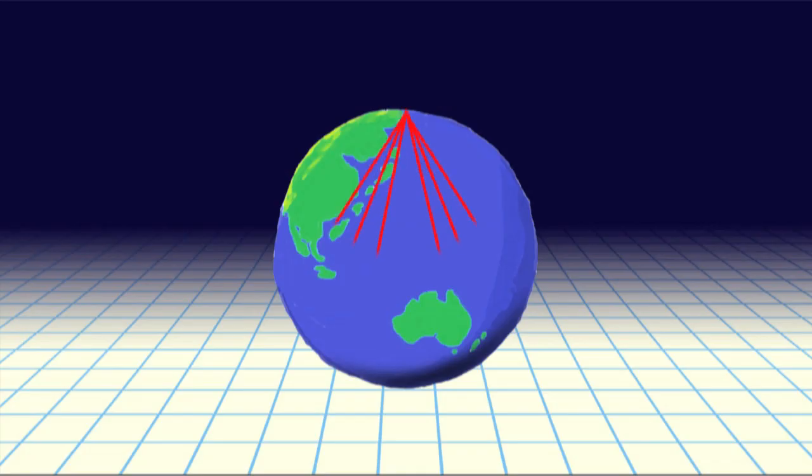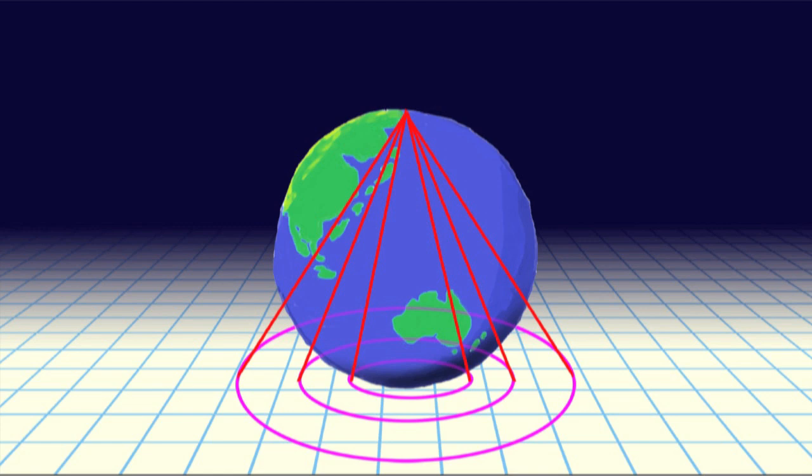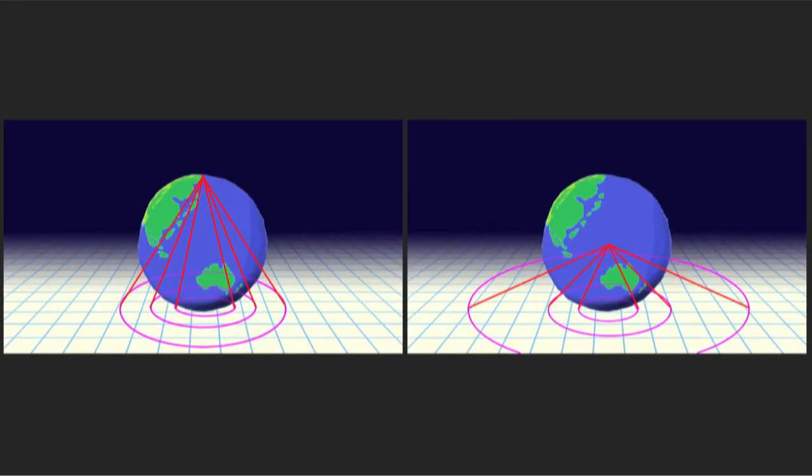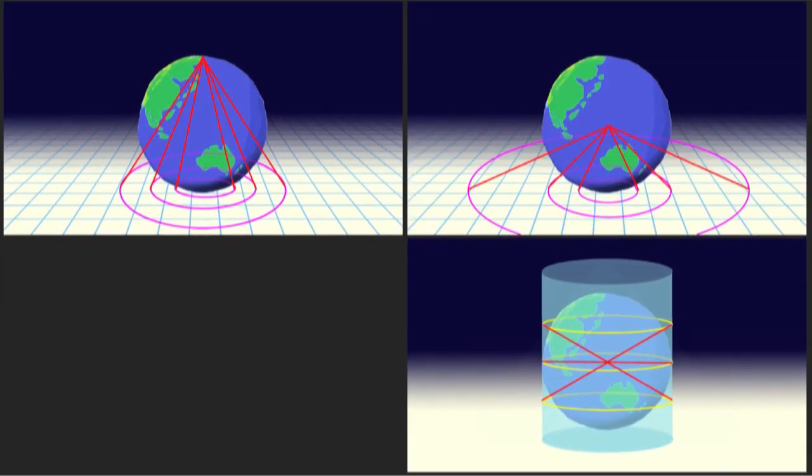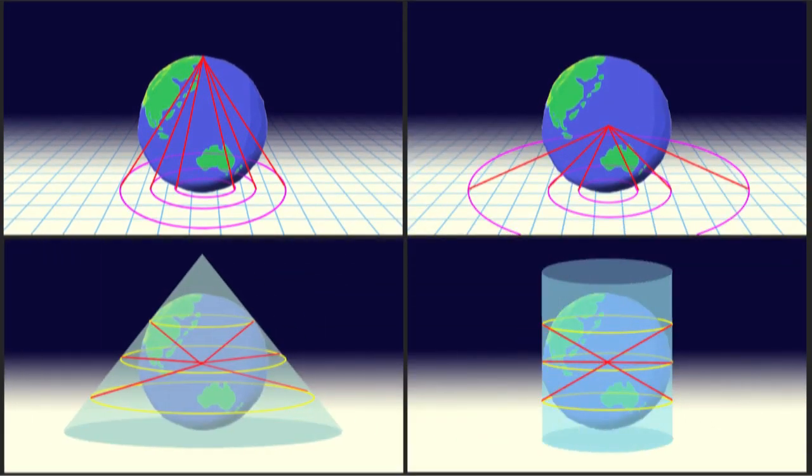But this isn't the only kind of projection. What if we moved the origin to the center of the sphere instead of the surface? What if we rolled our screen into a cylinder? Or a cone? What would be distorted? What would be preserved? Can you think of any other ways to project a map?